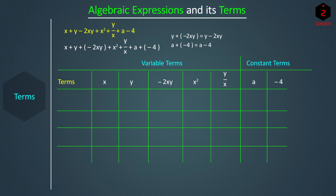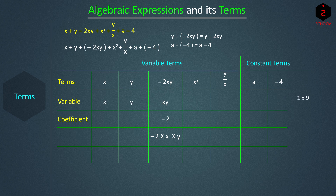Let's take the term −2XY. In this term, −2, X, and Y are multiplied. XY is the variable part of this term and −2 is a constant. This constant part, −2, is called the coefficient of the term −2XY. In other variable terms too, there is a constant part which is 1 — such as 1·X, 1·Y, etc. — but we write only X and Y. So these terms also have a coefficient of 1. A and −4 are constants, hence they have no coefficients.